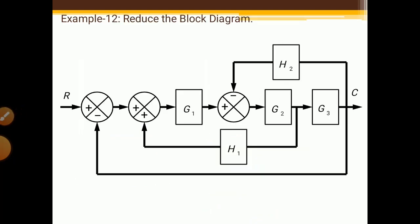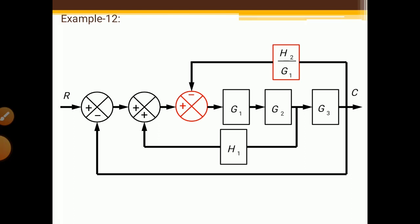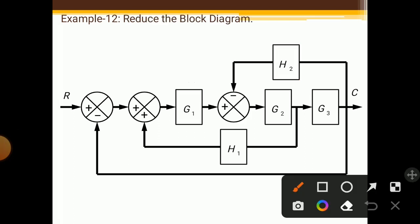Now we will reduce another block diagram. In this case, the block diagram is as shown in the figure. Try to understand from where we can start solving. In the first step, we are going to move the summing points ahead of block G1. Because we cannot take G1 and G2 in series directly, we must first move the summing points ahead of G1.